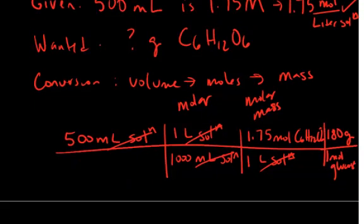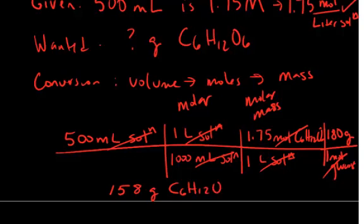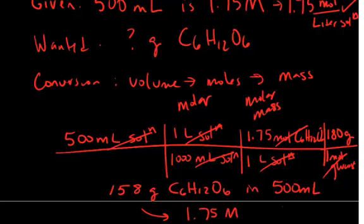So the mole unit is going to cancel, and I'm left in units of grams of glucose. So I'll do all the math in my calculator, and I come out with a value of what's needed is 158 grams of glucose, C6H12O6, in that 500 milliliters of solution to give a concentration of 1.75 molar. So we can actually use the molar concentration as a conversion factor between moles of solute and liters of solution.